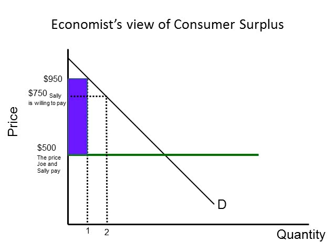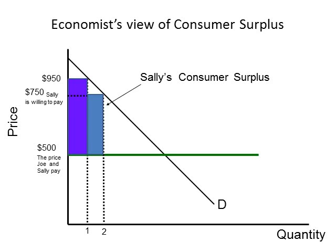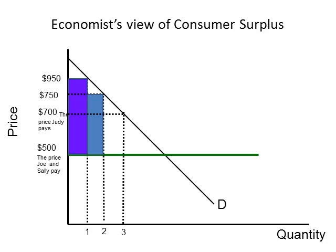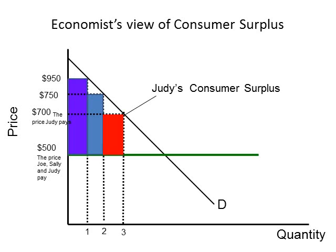Let's look at another consumer. Sally was willing to pay $750 for the HDTV but she actually only paid $500. So Sally's consumer surplus is the difference between what she paid, $500, and what she would have paid, $750, or $250. Judy wants to buy an HDTV also. She's willing to pay $700 for the TV but only pays $500. Since Judy was willing to pay $700 but only paid $500, her consumer surplus is the difference between $700 and $500, or $200.